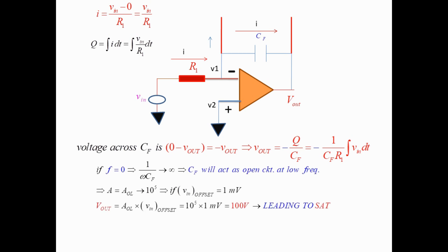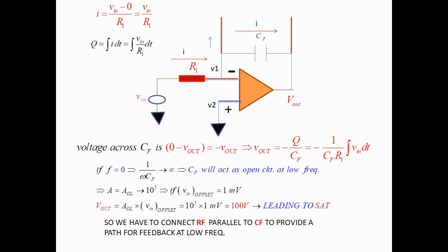If frequency F equals 0 (DC level), the impedance 1/(ωC) tends to infinity, so CF acts as an open circuit at low frequency, making the gain equal to A_ol, which is approximately 10^5 for a practical op-amp. Any input offset voltage present in all practical op-amps will drive the output to saturation. For example, if V_input_offset equals 1 millivolt, then V_output equals A_ol times V_input_offset equals 10^5 times 1 mV equals 100 volts, leading to saturation. Therefore, we must connect a feedback resistance Rf in parallel with CF to provide a feedback path at low frequency.